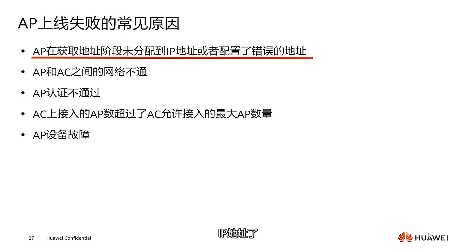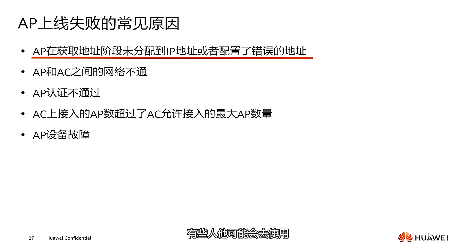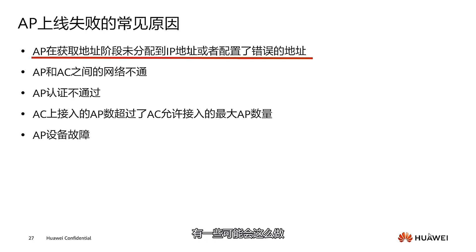That covers the first part: AP obtaining an IP address. There is also the issue of an incorrect IP address. Some deployments use a static IP configured directly on the device. If the wrong information is configured, pay attention to which VLAN is for the service and which IP segment it belongs to.